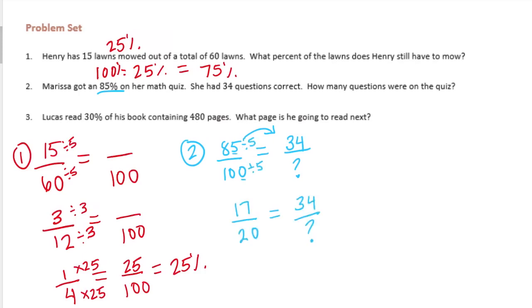And then to get from 17 to 34, I can do that by multiplying by 2. So all I have to do is multiply 20 by 2 and get 40. So there were 40 questions on the quiz.